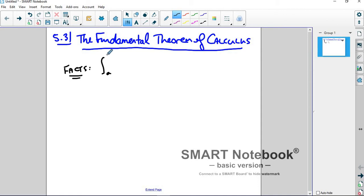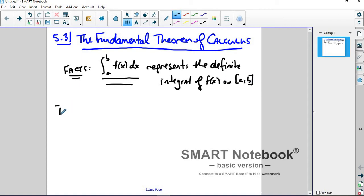Fact number one, the integral from a to b of f(x) dx, this symbol. Notice it looks a lot like the integral symbol, but it has numbers on the end. This represents what's known as the definite integral of f(x) on the interval a to b. The definition for this is this is equal to the limit as n goes to infinity of your Riemann sum. Sum i equals 1 to n of f(x_i) delta x. This is the right Riemann sum.